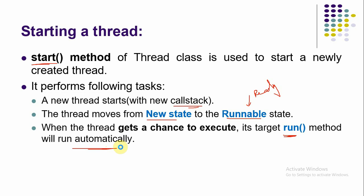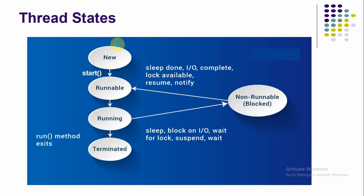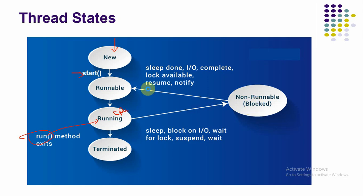To understand the thread lifecycle: when you create a Thread object it is in the new state. When you call start(), it becomes runnable — waiting for CPU. In the running state it is using the CPU; the thread is selected randomly by the CPU from the runnable state. During execution it can also be blocked by calling sleep() or waiting for I/O input and output. That is the thread lifecycle.